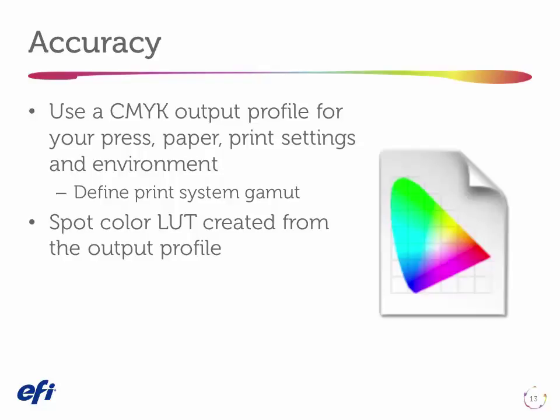The second thing we need is a spot color table — the LUT, or lookup table — that we create using the output profile. This is where we look up all the different CMYK tints for each spot color in the library for each output profile. Because that device-dependent CMYK recipe will change when I go from one stock to another, one set of print settings to another, and certainly when I go from one press to another.